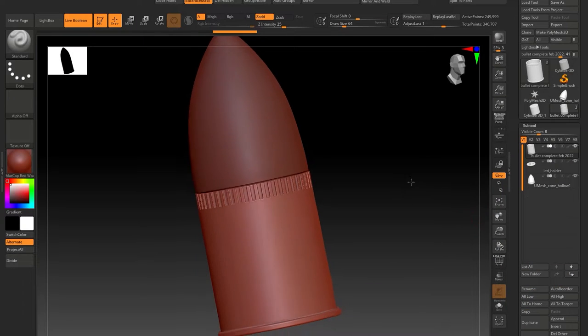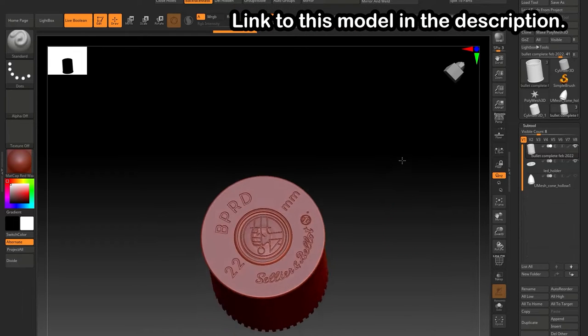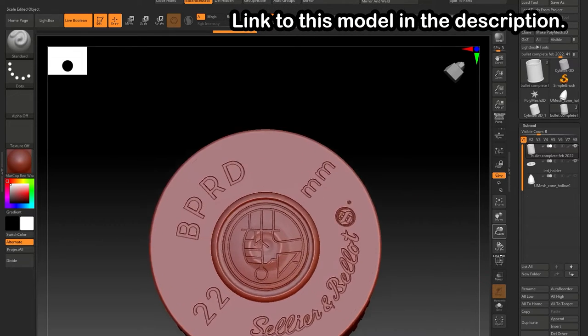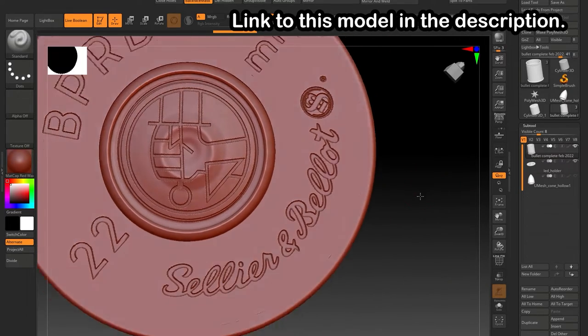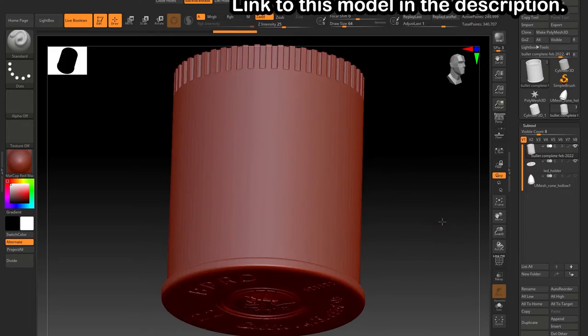I started by modeling this in ZBrush and Modo. I'll put a link to the file in the description. It's three separate pieces: the shell casing, the clear cap, and a little LED holder for the inside. I made up some details for the bottom, but these won't be seen for my uses anyway.